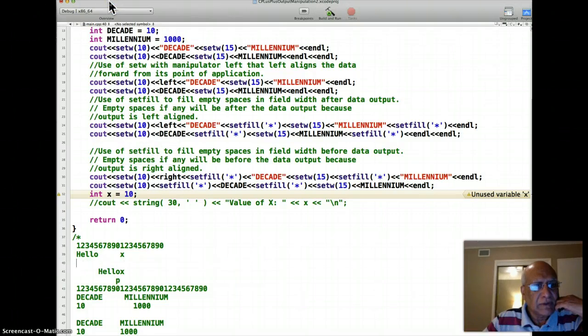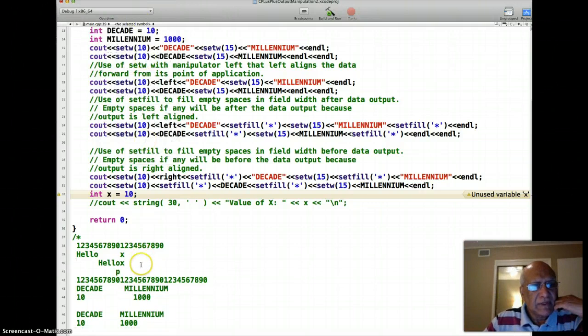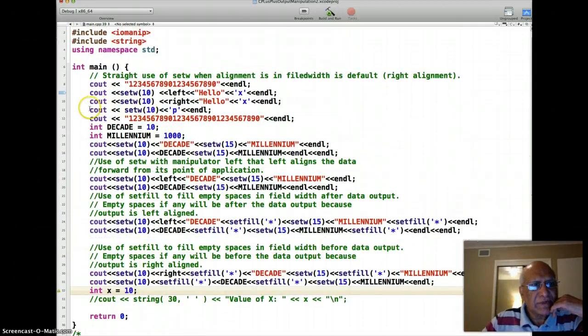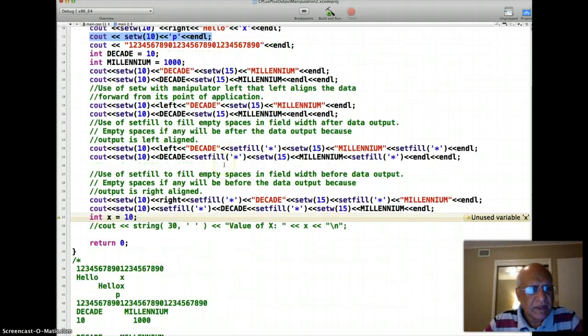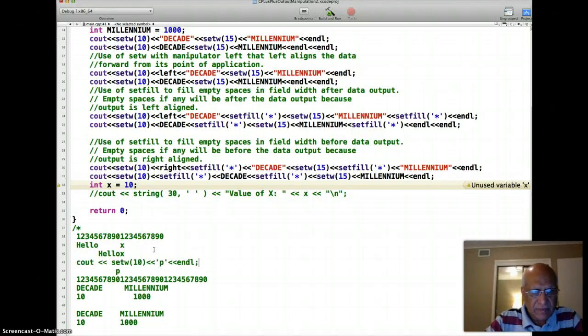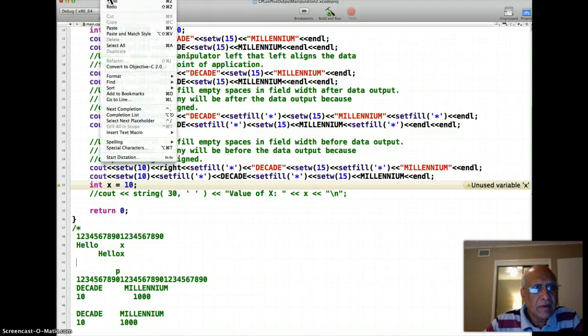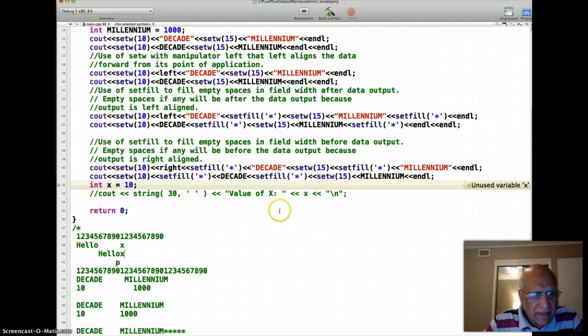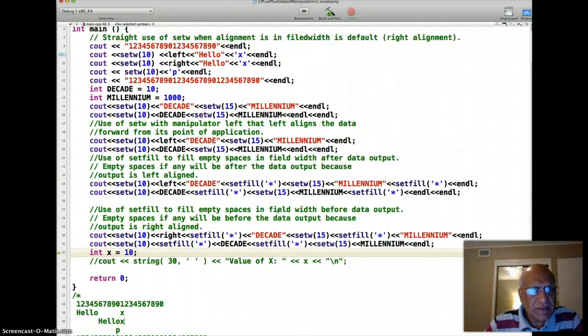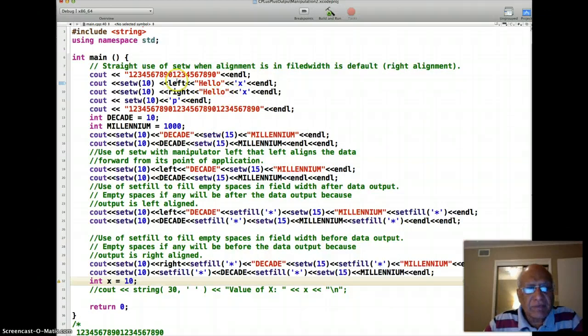Then P comes from this line that I'm saying print P right justified because I've done the right here in 10 field width. You can see that this is aligning with the 10th character, so 9 blanks before that, so P got printed in 10 field width also. That's pure use of setW. We have not aligned, and of course left and right manipulators.